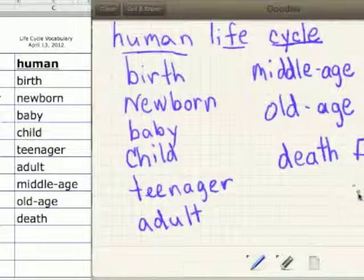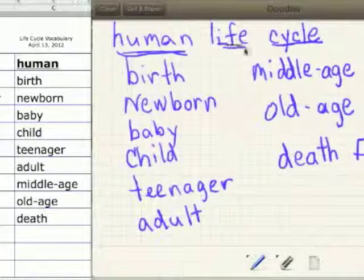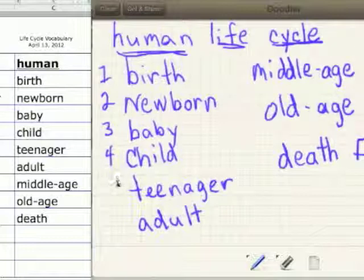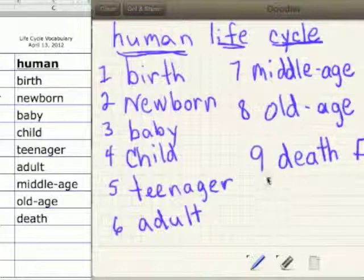So that's the human life cycle. It begins here. This is one, two, three, four, five, six, seven, eight, nine things.